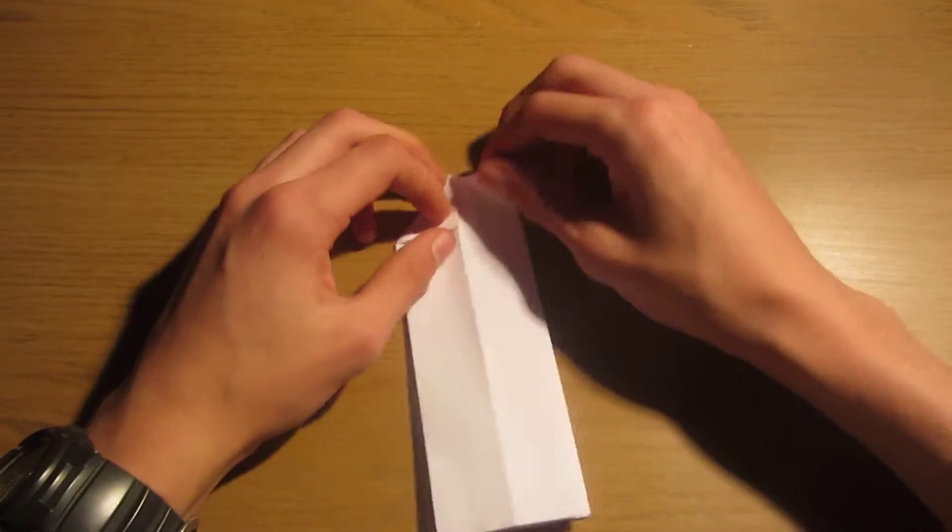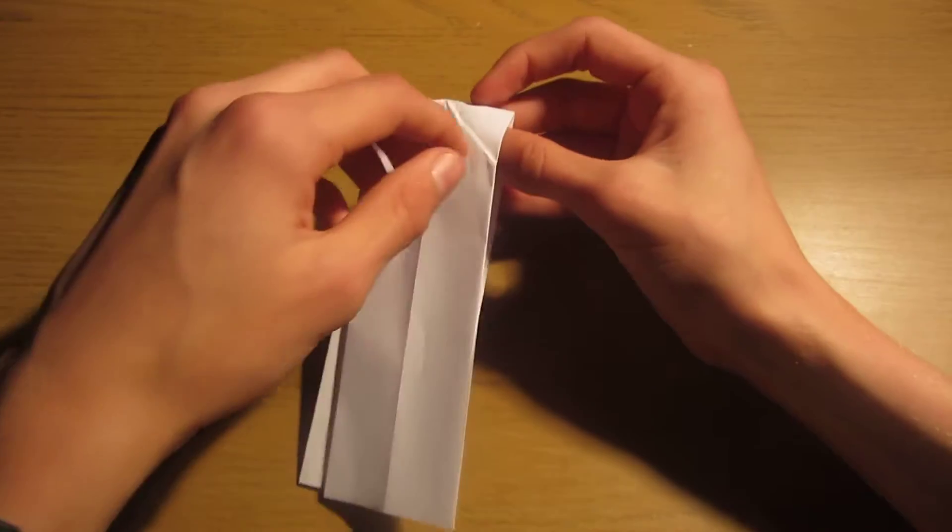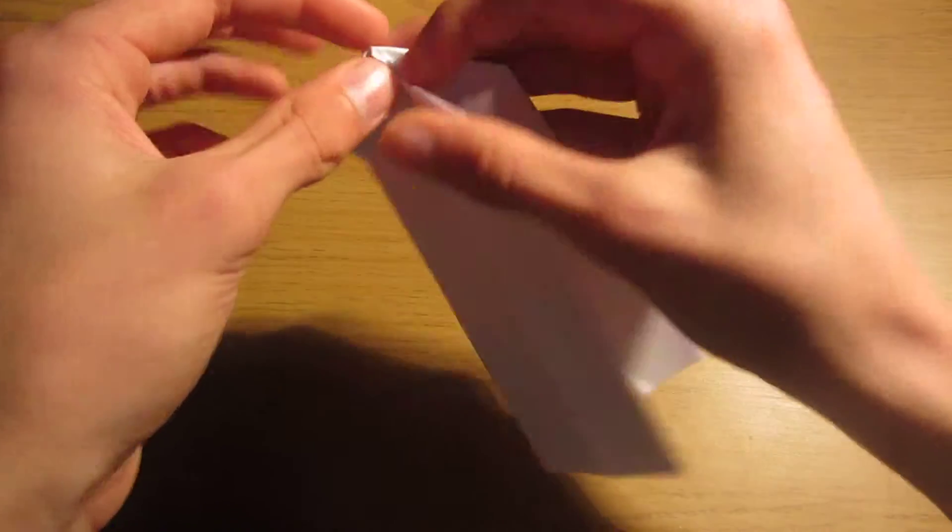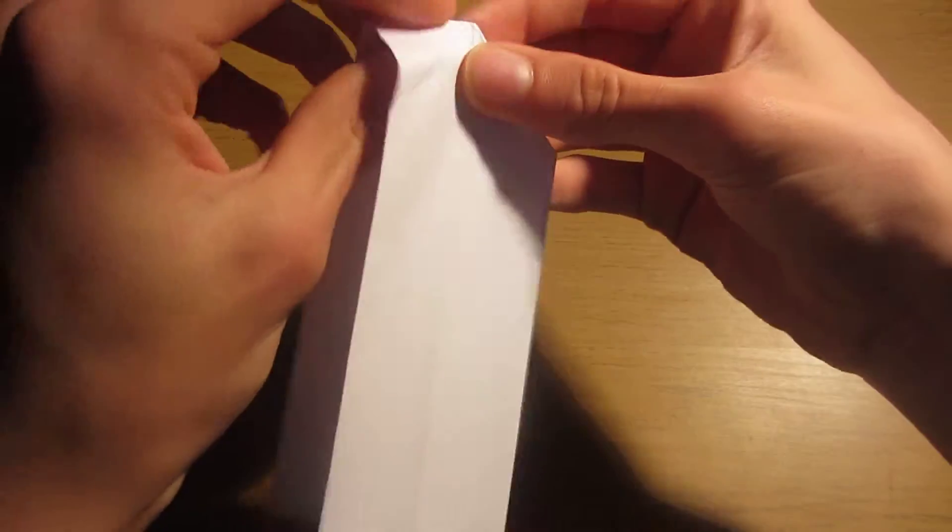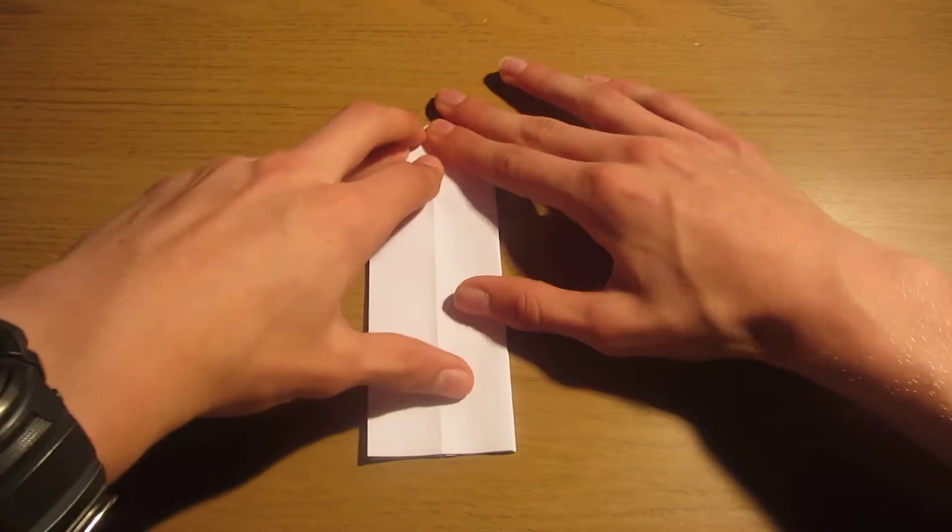So what we're going to do now is we're going to inside reverse fold these triangles. So we're just going to open it and squash in like this. And close. And do the same to this side as well. And then crease.